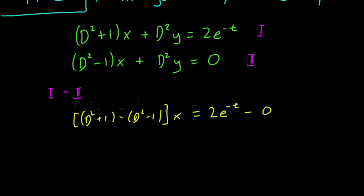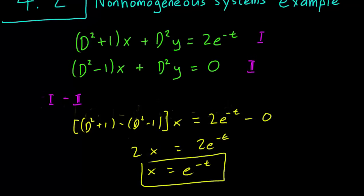And this equation of course simplifies to just 2x equals 2e^(-t) and therefore x equals e^(-t), which is a very straightforward answer for the x equation.